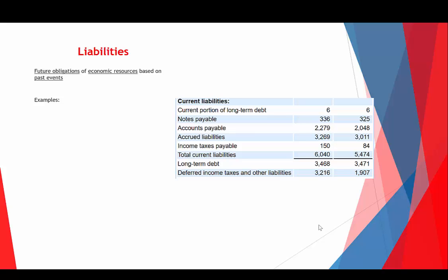Simplistically, we usually think of liabilities as cash we owe to people — that's probably the most common. A supplier sold Nike some raw materials to make into shirts; they've got to pay them back. Someone's done some work for the company; they've got to pay them back. Those are the most common examples.